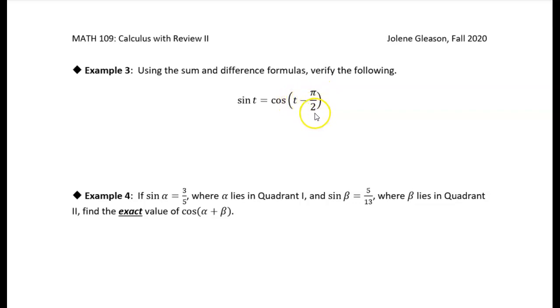Now, we've kind of looked at this before, that the sine and cosine are related to each other. They're just one is shifted by 90 degrees to the left or right of the other. But let's go ahead and use the difference formula.